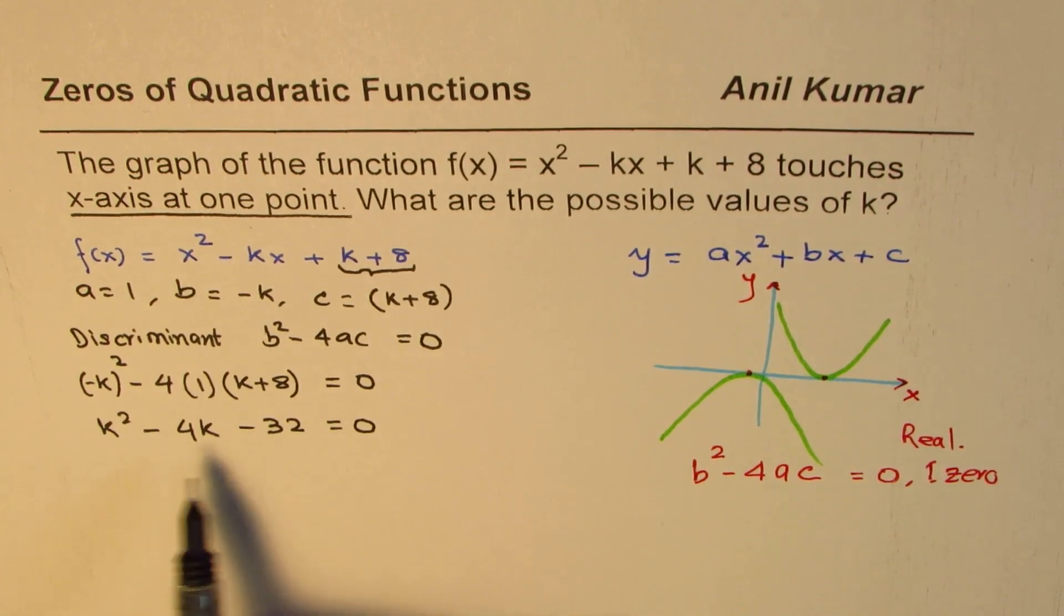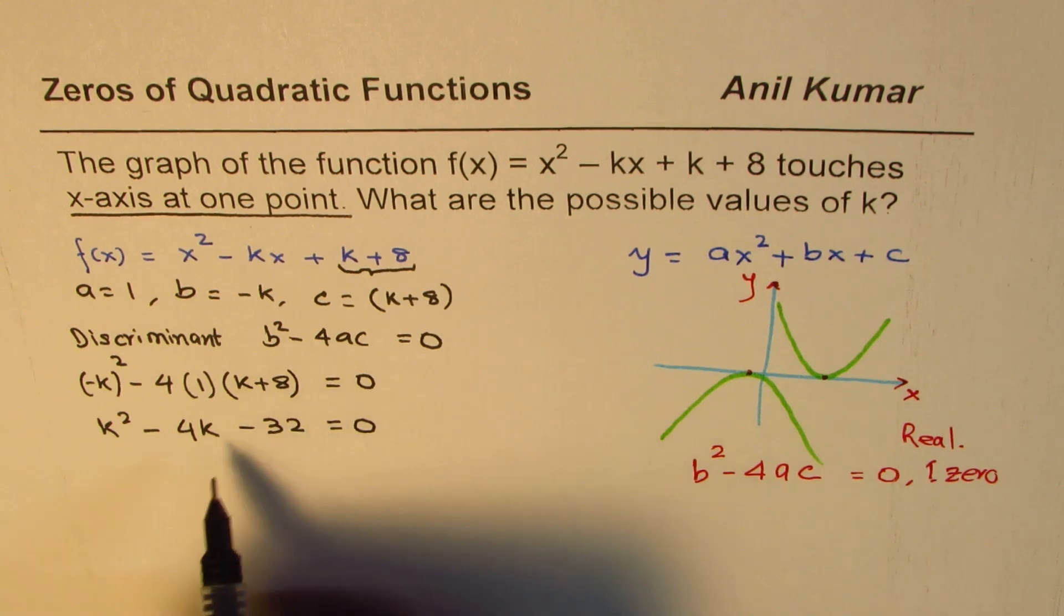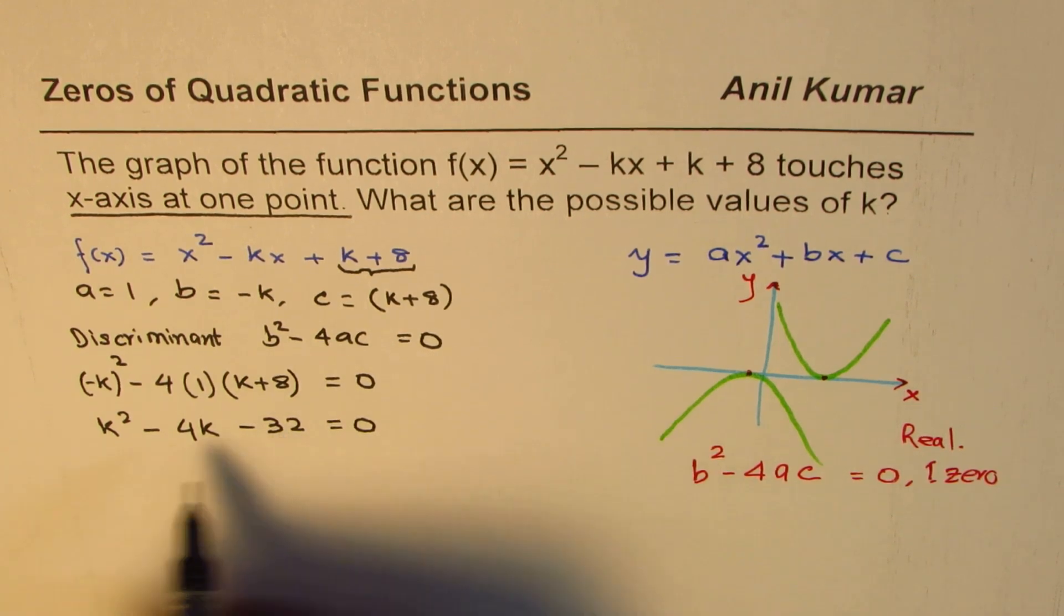From here, we need product of 32 and sum of 4. Two numbers should be of opposite sign, bigger number has to be negative. So bigger number has to be negative.